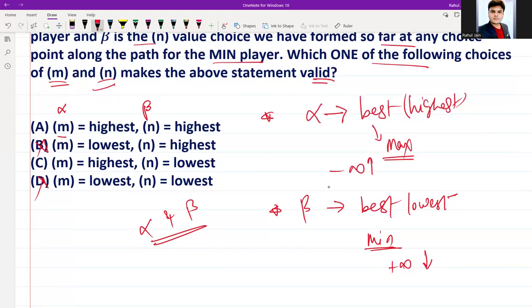For the min player, beta should be the lowest value because the min player is going to minimize its score. So basically, alpha should be max and beta should be min. That is, alpha should be highest and beta should be lowest.